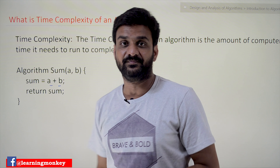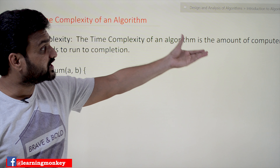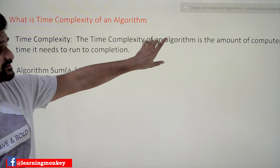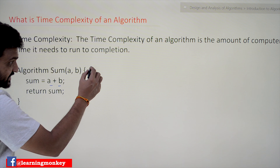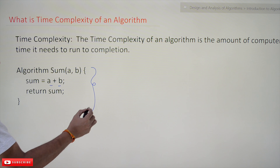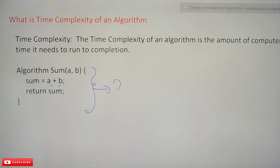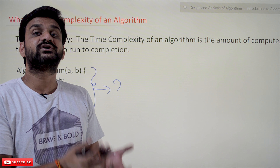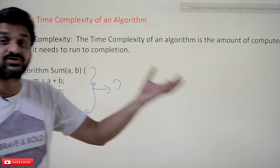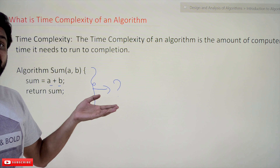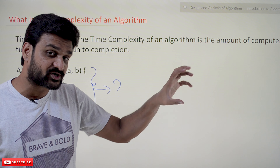In practice, the definition states that the time complexity of an algorithm is the amount of computer time it needs to run to completion. So in order to complete the execution of this algorithm, what is the amount of time it is taking — that is what we call time complexity. But the question is: how can we compute the amount of time taken by this algorithm? What are the factors upon which this program depends in order to get completed?